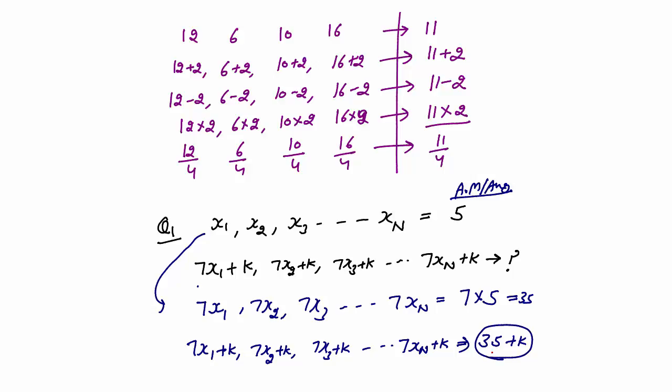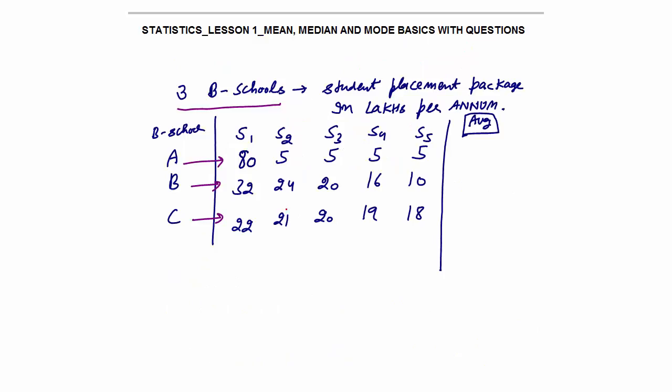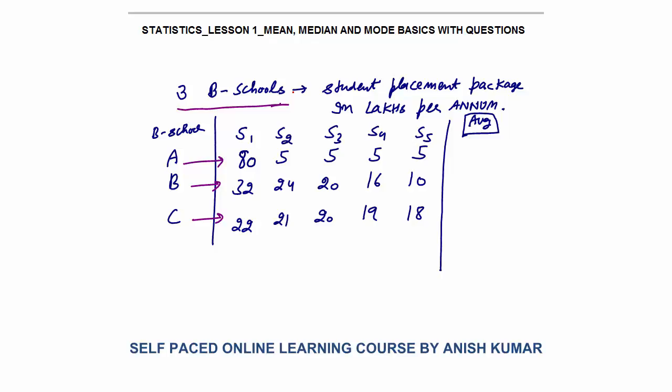Here is an example. I have 3 business schools and in each school there are 5 students. I have written their annual placement package in lakhs per annum. School A, School B, and School C each have 5 students. If you calculate the average package in each college, it is 20 lakhs per annum for all three schools.